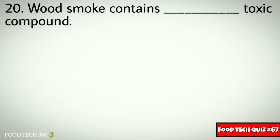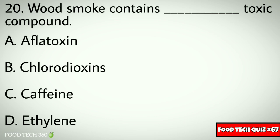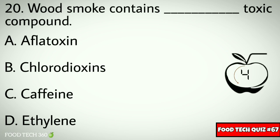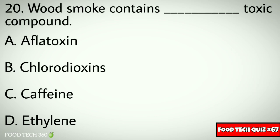Question number twenty: wood smoke contains which toxic compound? Options: A) aflatoxin, B) chlorodioxins, C) caffeine, D) ethylene. Correct answer: B) chlorodioxins.